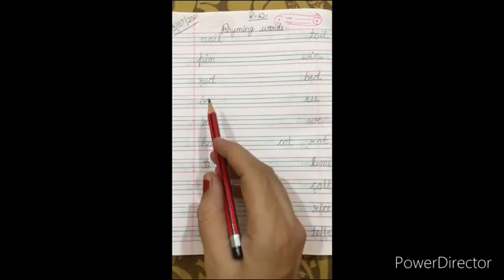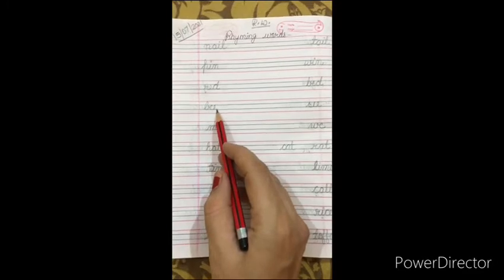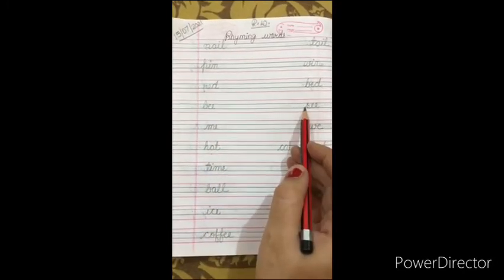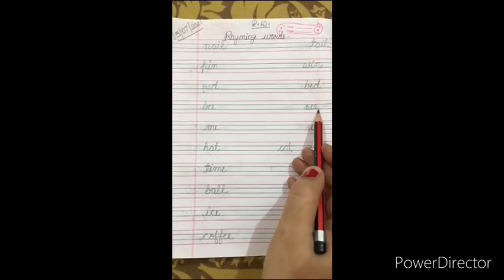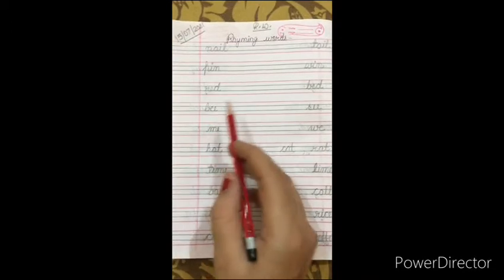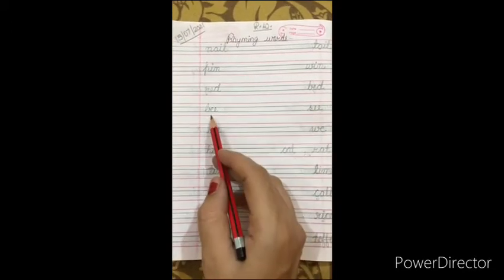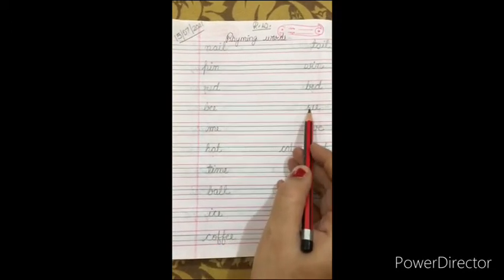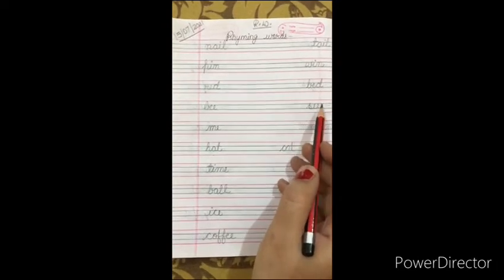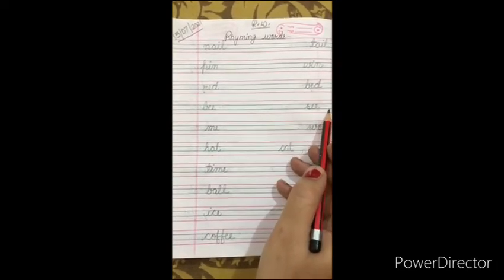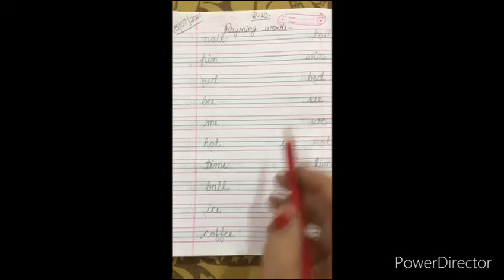Now come to next word. B-E-E, bee. S-E-E, see. Bee ka ending sound, see. Bee, see. We can also write here fee, F-E-E, fee.